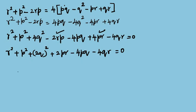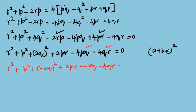If we take this, we have r² + p² + (-2q)² + 2pr - 4pq - 4qr = 0.